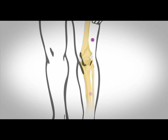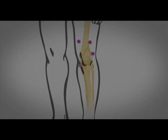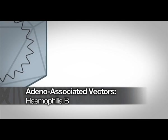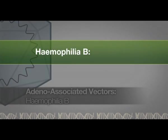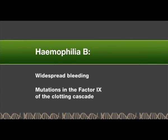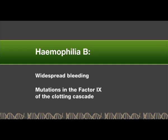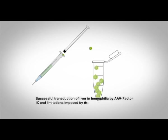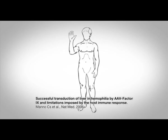Another viral vector, the adeno-associated vector, has been used in humans for the treatment of various inherited diseases such as haemophilia B. This disease causes widespread bleeding due to a mutation in the factor 9 of the clotting cascade. In this example of in vivo gene therapy, adeno-associated vectors carrying a correct copy of the factor 9 gene were used to infect the liver of patients with haemophilia. Thus, the liver became a pump continuously releasing factor 9 into the circulation, producing very promising results in patients.